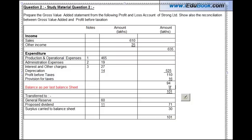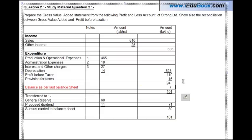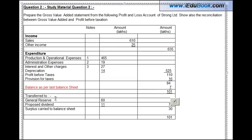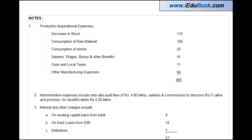Please note that the gross value added statement is in respect of a particular year, so anything pertaining to the last year must be excluded. This prior year profit is added to the current year profit, making it 101. The numbers transferred to general reserve, proposed dividend, and the surplus carried to the balance sheet are also given.